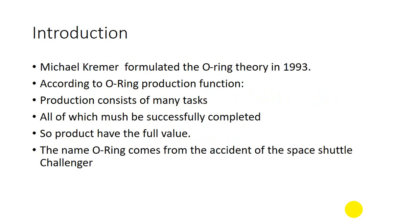He uses the 1986 Space Shuttle Challenger as a metaphor for coordinating production and the O-ring theory of economic development. The Challenger, which is a space shuttle, has thousands of components, but it exploded because of the temperature at which it was launched. The temperature was so low that one component, known as the O-ring, malfunctioned. That O-ring component required more temperature, but the temperature was less than required, and due to this reason the O-ring malfunctioned and the whole Space Shuttle Challenger mission was unsuccessful.